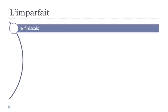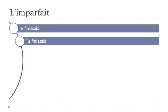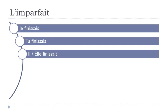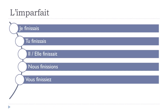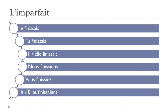Now for 'finir': je finissais, tu finissais, il finissait, elle finissait, nous finissions, vous finissiez, ils finissaient, elles finissaient. Same pattern — finissais, finissais, finissait all share the same phonetic form. Nous finissions uses the 'yon' sound, and vous finissiez ends with 'yé'.